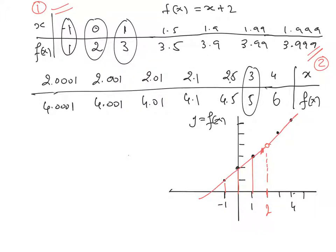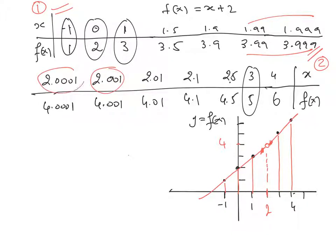We note that as x approaches 2 from the left, the values we calculated — stopping at 3.999 but we could continue staying closer to 2 — show that f(x) approaches 4. The same thing happens when x approaches 2 from the right by values larger than 2, with values like 2.001, 2.0001 — again f(x) approaches 4.